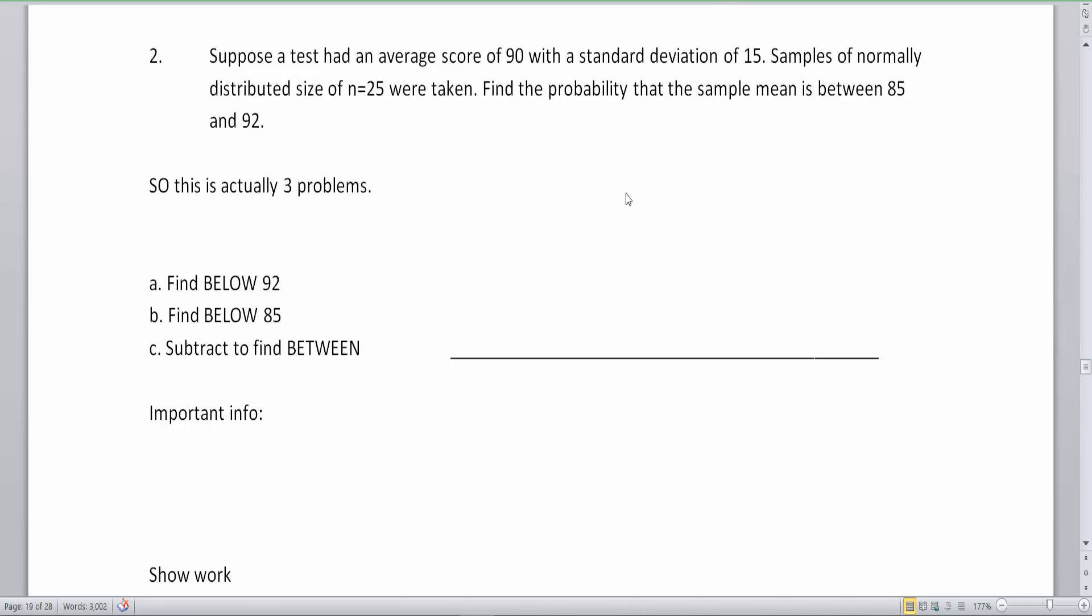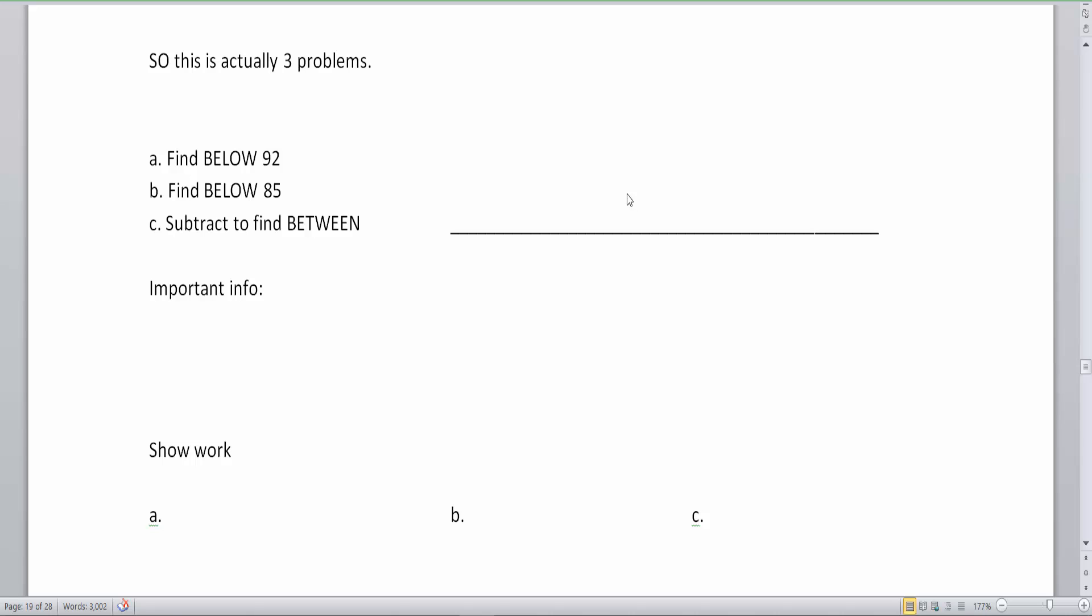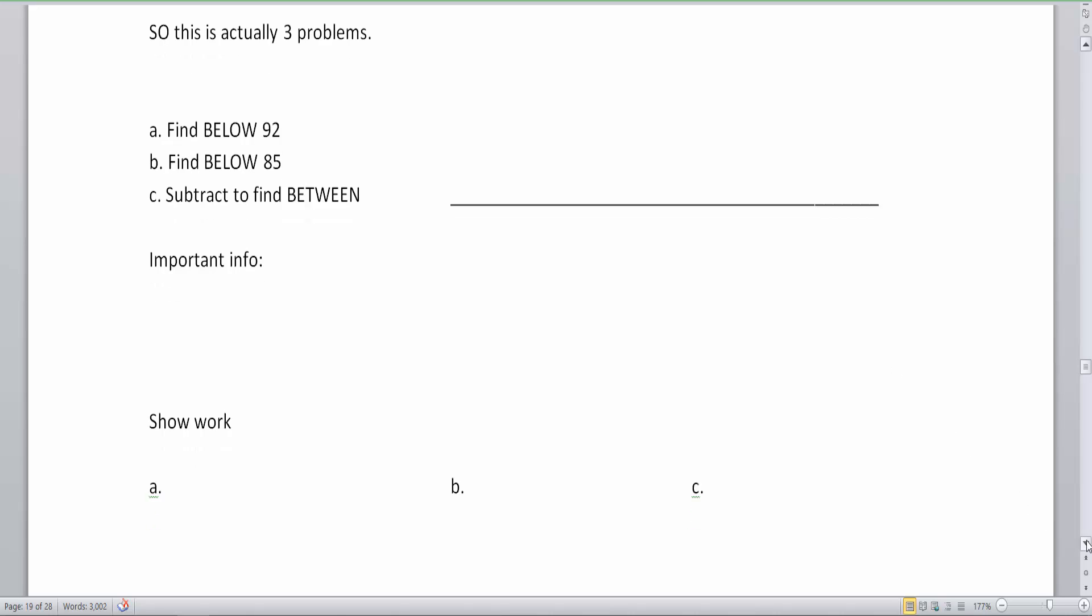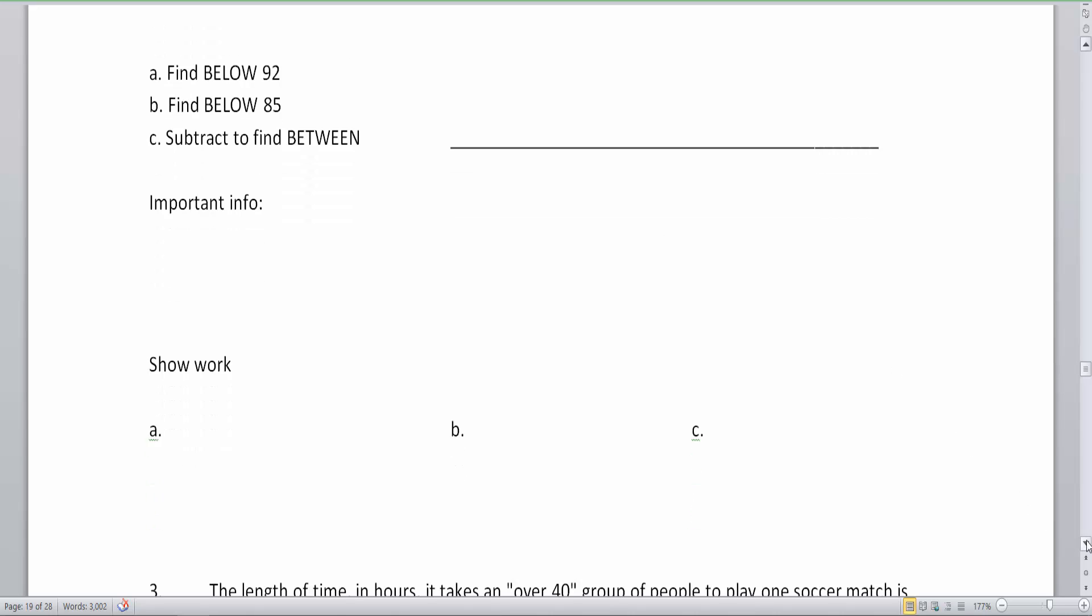The first part is that you have to find below 92, and the second part is you have to find below 85, and then subtract to get betweenness. To remind ourselves a little bit of this, we can go back to the previous videos that talked about going below and above and between, and we still do the same things here except we have a new formula. And also with this new formula, we have a new modifier of the standard deviation.